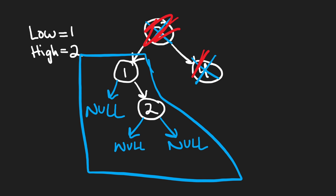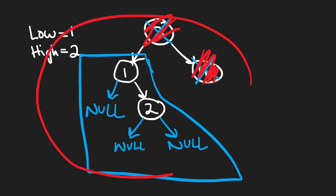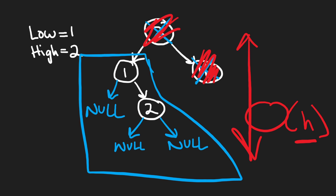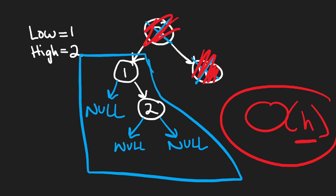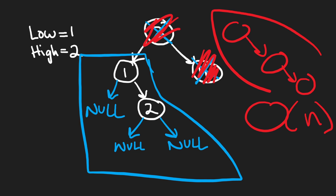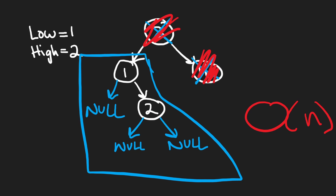Since we are recursively running this algorithm and potentially in the worst case we'll have to visit every single node in the tree, the overall time complexity is O(N), where N is the number of nodes. The memory complexity is O(H), where H is the height of the tree, because that's the recursive call stack depth. In the worst case, H could be N — for example, if the tree were just like a linked list.